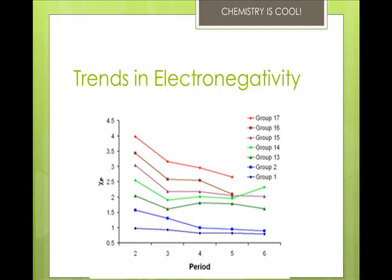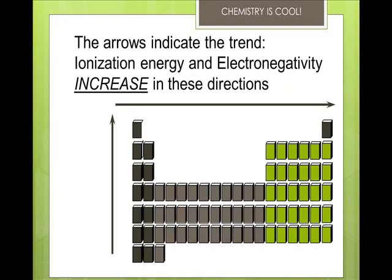Ionic size and atomic size increase going down a group and to the left across a period. Ions always have a noble gas configuration, meaning a full outer level. For example, the sodium atom is 1s2, 2s2, 2p6, 3s1, so it forms a plus one sodium ion with a 1s2, 2s2, 2p6 configuration, which is neon. Metals form ions with the configuration of the noble gas before them on the periodic table because they lose electrons. Nonmetals form ions by gaining electrons and end up with the configuration of the noble gas after them. Each step down a group adds an energy level, so ions get bigger going down, and across a period the nuclear charge increases so they get smaller.